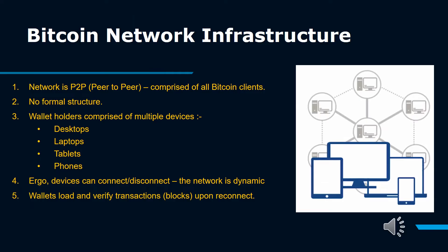Bitcoin is structured as a peer-to-peer network architecture on top of the internet. The term peer-to-peer means that the computers that participate in the network are peers to each other — they are all equal, there are no special nodes, and all nodes share the burden of providing network services.